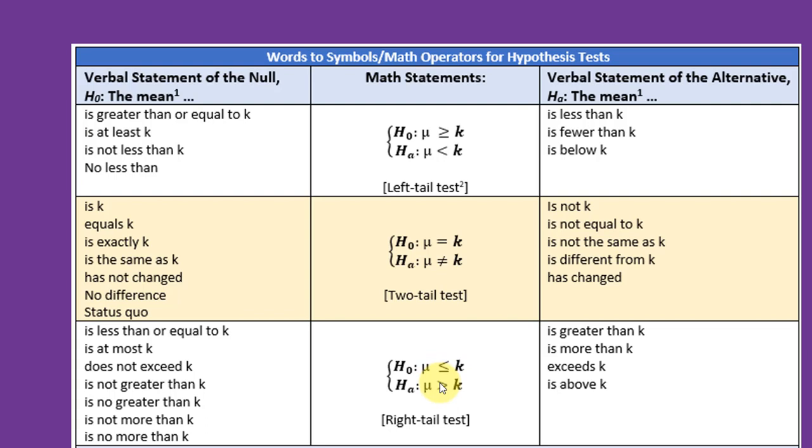So you can use this table and find these keywords and key phrases, find them in the table, and it will pretty well guide you. If you see is equals to, that means the claim is the null. If it's not equal to, that means the claim is the alternative.